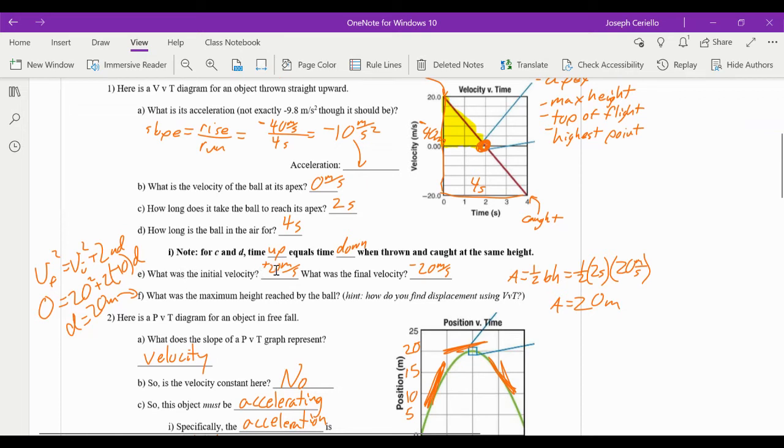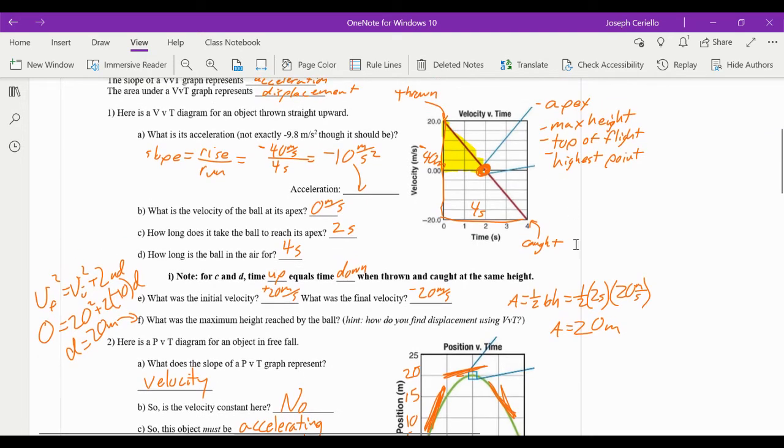What is the initial velocity? Positive 20 meters per second. What's the final velocity? Negative 20 meters per second. That makes sense, right? If you throw a ball up with an initial velocity of 20 meters per second, it slows down on its way up all the way down to zero. And then on its way down, it starts speeding up. And by the time you catch it, it's going 20 meters per second the opposite direction. We use negative to denote that.